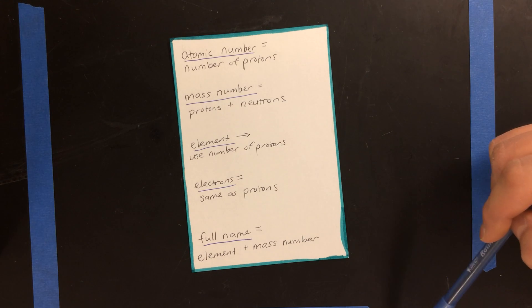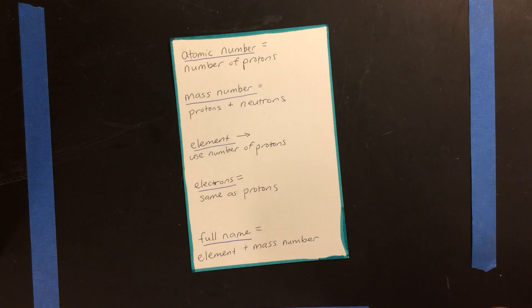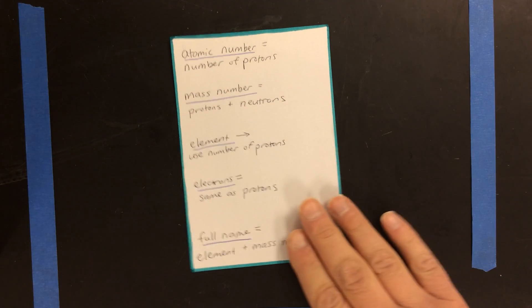One of the biggest challenges students face when learning to name atoms is keeping all this information straight. So I would suggest making a cheat sheet like this in order to help you out. Let me work through a first example to show you how this would go.